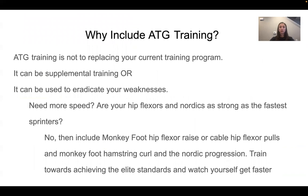I incorporate ATG training in all of my programs. It is not an end-all be-all, but it can be and it can make you a great athlete. It can also just be a supplemental program to your current training methods, or it can be used as a method of picking and choosing exercises to eradicate your weaknesses. It is a measurable system that provides specific progressions to elite standards. Each standard is based on your body weight, and percentages are taken from what elite athletes are capable of doing in their sports. For example, all elite sprinters have phenomenally strong hip flexors and hamstrings, so they're easily capable of performing a Nordic curl even if they've never trained it, and their hip flexors are capable of lifting 50% of their body weight. ATG has a safe, progressive, and specific method to help you achieve each standard and become a bulletproof elite athlete.